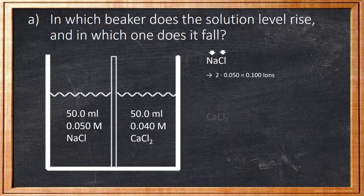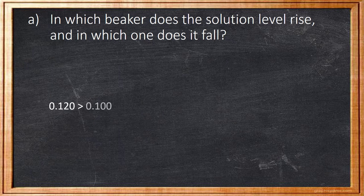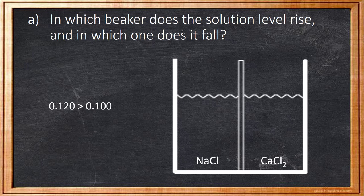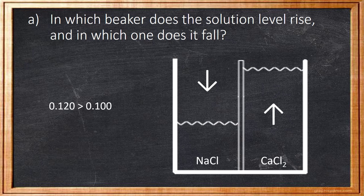Calcium chloride provides three ions: calcium, chlorine, and a second chlorine. 3 times 0.04 equals 0.12 ions. Since 0.12 is bigger than 0.10, the solution will fall in the first beaker and rise in the second beaker, because calcium chloride has a higher particle concentration.